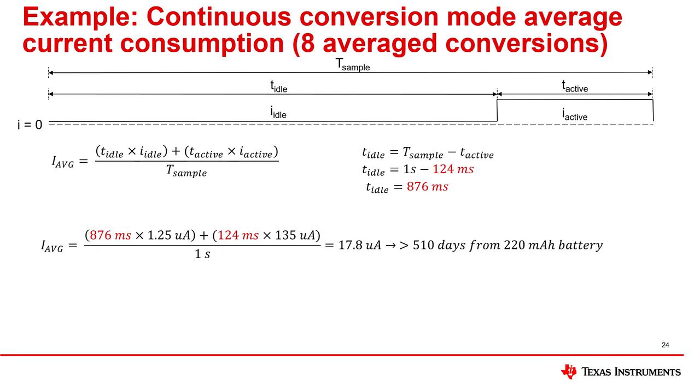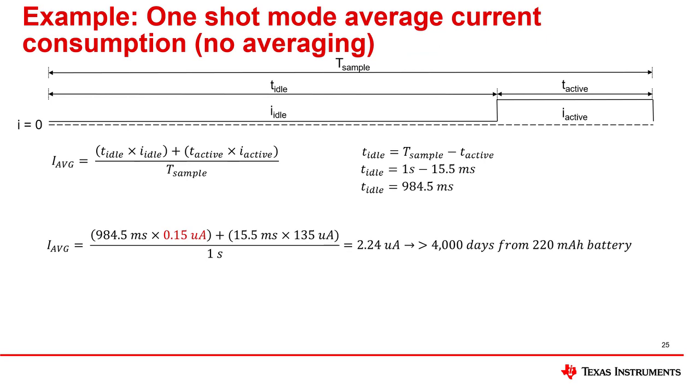Finally, let's take a look at how the result changes if we instead configure the device for a single temperature conversion every second in one-shot mode with no averaging. To update our calculation to consider one-shot mode, all we need to do is go back to the TMP117 datasheet and insert the typical value for current consumption in shutdown mode, shown here in red. In this case, i-idle has changed. We can again simplify and find that the current draw for the sensor operating at one hertz conversion rate in one-shot mode with no averaging is around 2.24 microamps. For comparison, this would correspond to more than 4,000 days from a 220 milliamp hour coin cell battery, or a 32 percent reduction in power consumption when compared to operating at the same conversion frequency in continuous conversion mode without averaging.